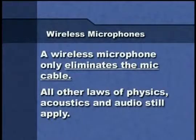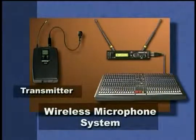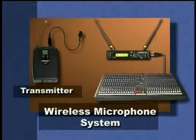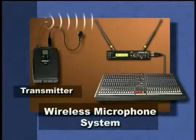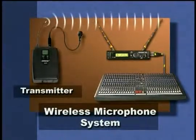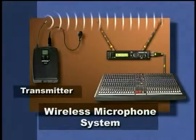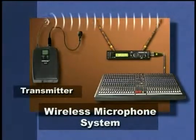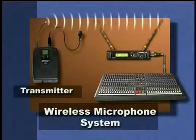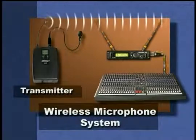The transmitter converts the audio signal created by the microphone to a radio signal, which is sent to the receiver through the air. Think of it as the difference between the cordless phone in your house that everyone fights over and the old one with the wire on it that no one wants to use anymore.